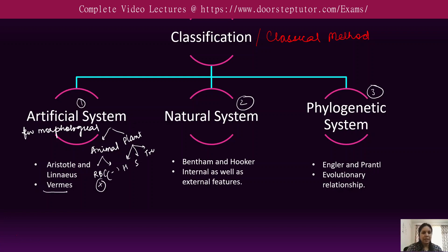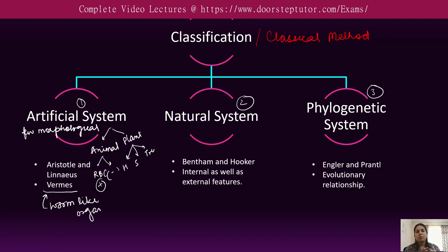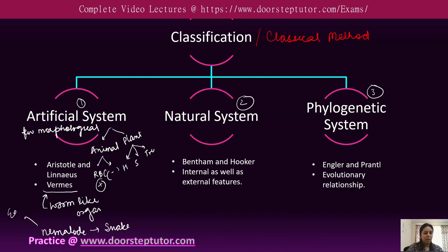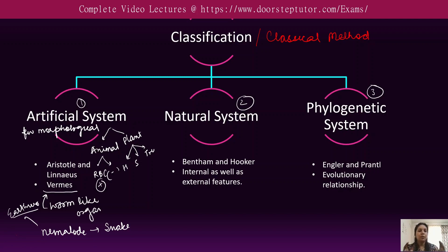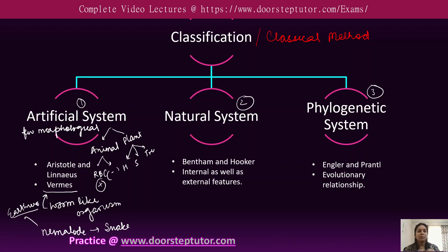For example, they classified all worm-like organisms into a group known as 'worm.' This included a wide range of animals ranging from nematodes — like the earthworm — to snakes. So the worm group included all worm-like organisms ranging from earthworms to snakes.